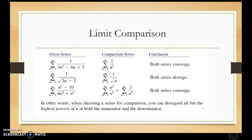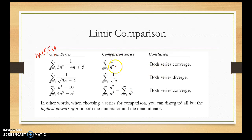This is from the textbook: limit comparison works very well when comparing what they describe as messy algebraic series to a p-series. When choosing a series for comparison, you can disregard all but the highest powers of n in both numerator and denominator — similar to our limits at infinity approach.